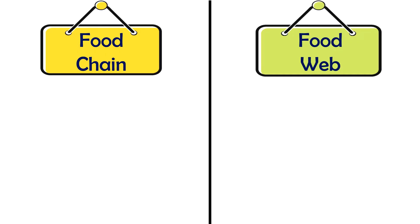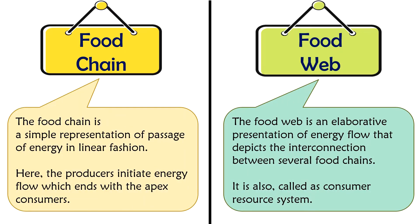Now let us discuss some key differences between food chain and food web. If we talk about the meaning, the food chain is a simple representation that illustrates the passage of nutrients and energy in a linear way. The producers initiate this energy flow and it ends with the apex consumers. Almost all the food chains begin with the producers that are present at the basal level. These producers are generally green plants that are capable of performing photosynthesis. On the other hand, the food web is an elaborative presentation of energy flow that depicts the interconnection between several food chains. The food web is often referred to as a consumer resource system. It is formed when various food chains operate simultaneously.